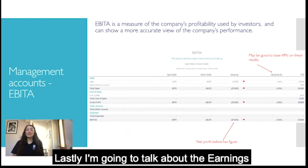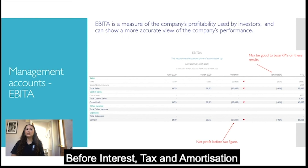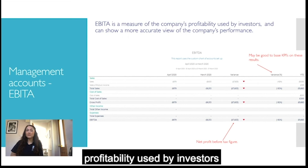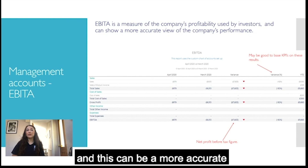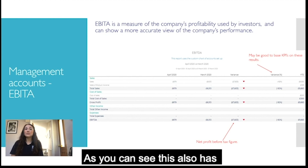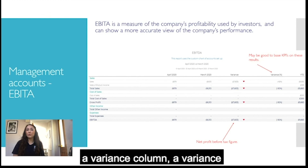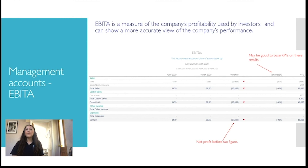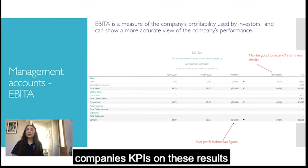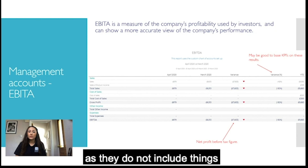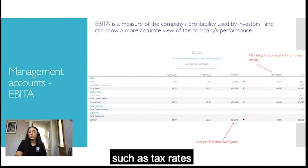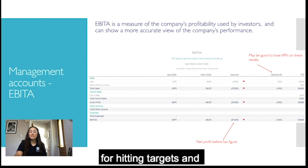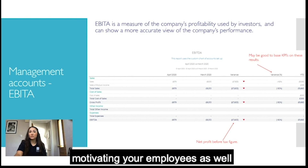Finally, the earnings before interest, tax and amortisation (EBITA) is a measure of the company's profitability used by investors and can be a more accurate view of company performance. This also has a variance column, variance percentage column, and year-to-date column. It may be good to base your company's KPIs on these results as they do not include things you cannot control such as tax rates, which may be particularly useful for hitting targets and motivating employees.